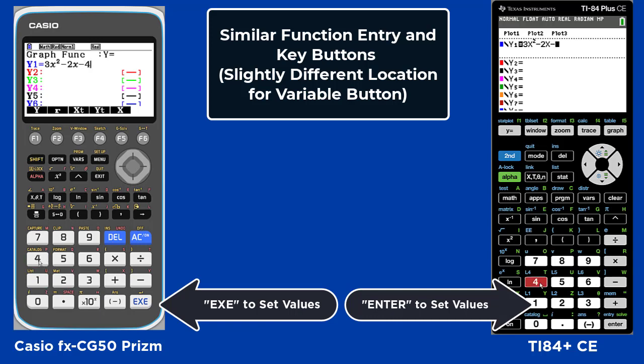On the Casio, you use Execute to set values, and on the TI, you use Enter.